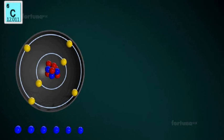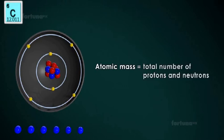We now have the number for our protons and our electrons. Atomic mass represents the total number of protons and neutrons inside the nucleus.